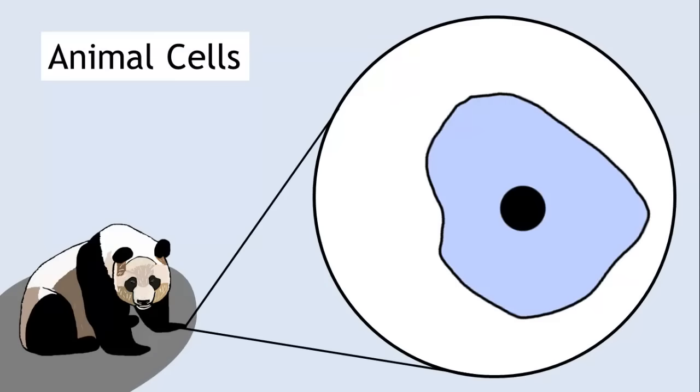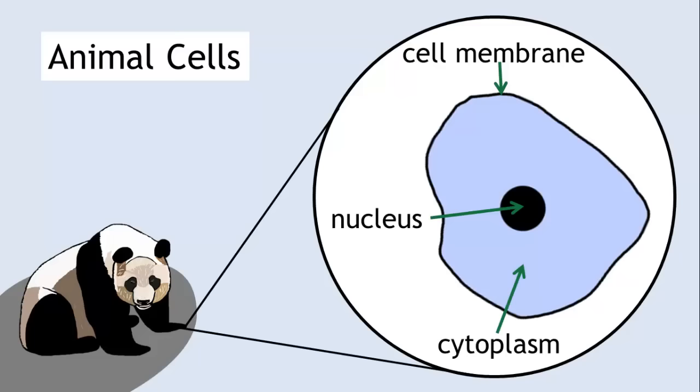Animal cells. A typical animal cell will include the nucleus, a cell membrane, and a cell cytoplasm.